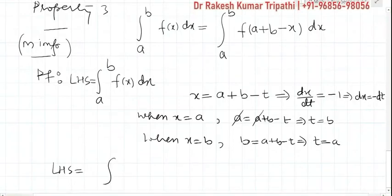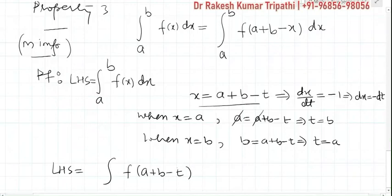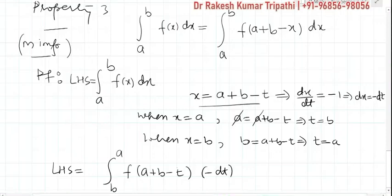The integral of f(x) becomes f(a + b − t), since we substituted x = a + b − t. And dx becomes −dt. The original limits were from a to b, but now the limits are from b to a.